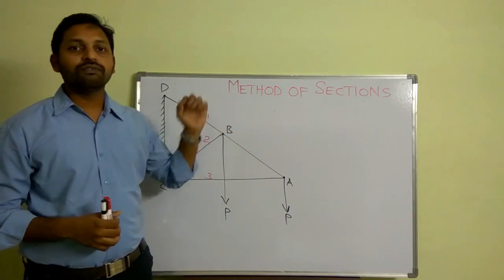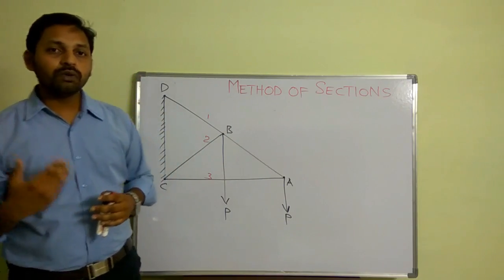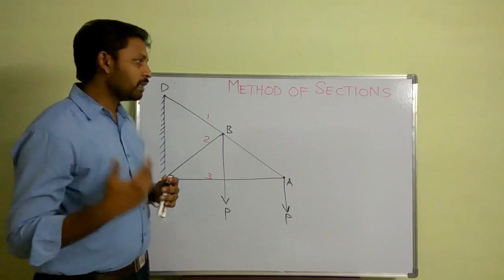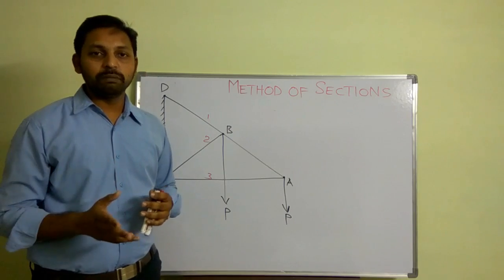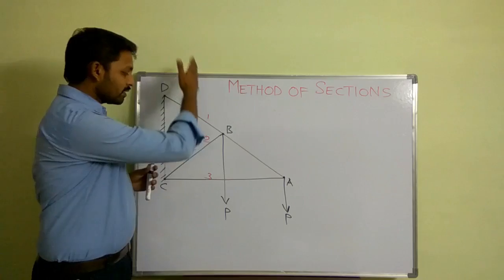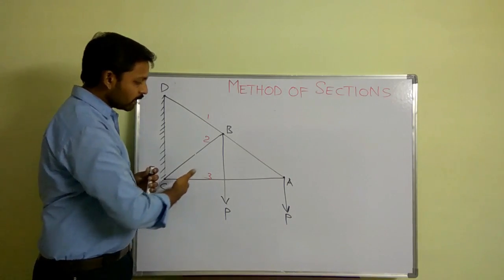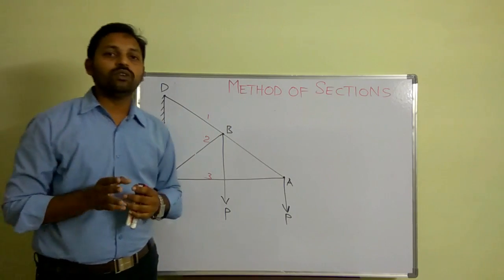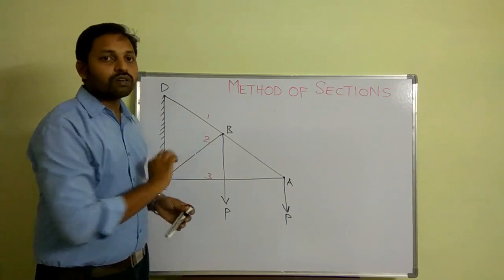When you apply the method of sections, first of all you need to consider the section line. You can consider the section line in any manner but you should follow certain rules. We have to intersect only three members, and the section line should pass through the members, not through the joints.